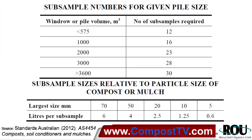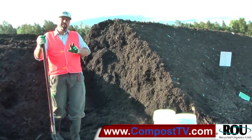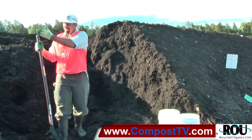In the Australian standard — we'll put the slide up — for this windrow we're assuming about 600 cubic meters, so we need a minimum of 13 incremental samples. The slide shows the different volumes for a windrow, the number of incremental samples required, and also the size of sample needed depending on the particle size grading of the materials.